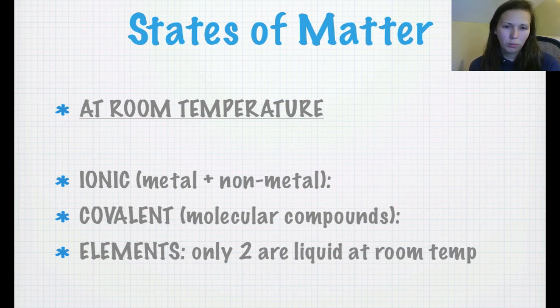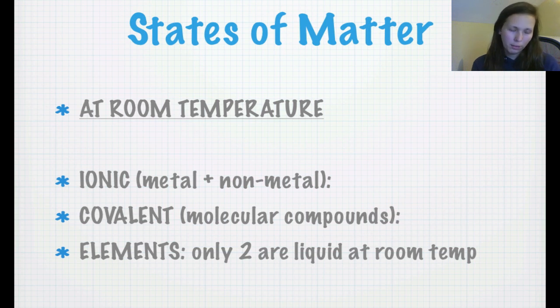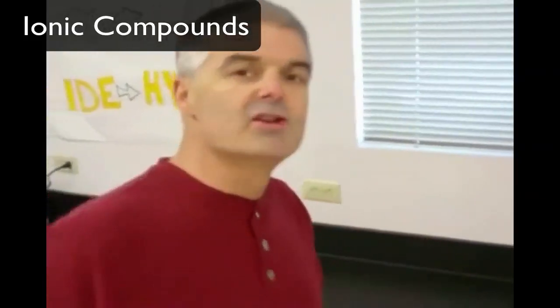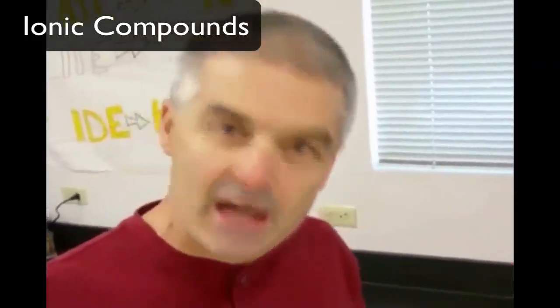Before we go into talking about the writing and balancing of chemical equations, I want you guys to look at states of matter and what states of matter different things have at room temperature. We want to assume that we're talking about everything at room temperature, which is around 22 Celsius or 72 degrees Fahrenheit. I'll show you guys a little video in a second, but first I want you guys to pause and write these down. You guys are going to fill in what you think ionic covalent elements are, what states of matter they're at.